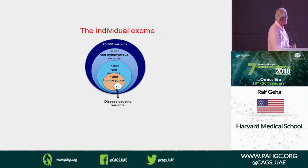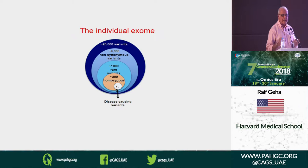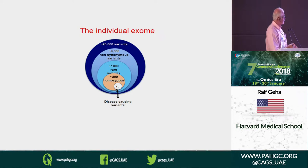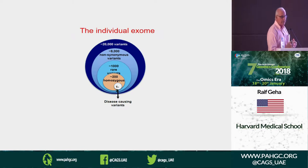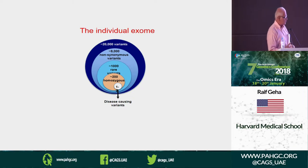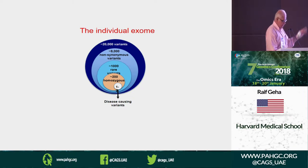Of these 20,000 variants, 9,000 are non-synonymous variants, and they cannot be ignored because they can have a very drastic effect on the immune system. 1,000 are rare variants and 200 are homozygous — more so if you have consanguinity. Some of our patients have 14% regions of their genome as a region of homozygosity. We need to get back to that one or two.